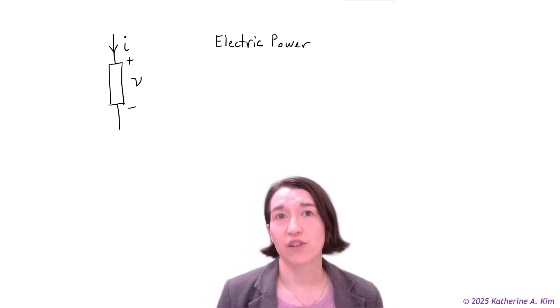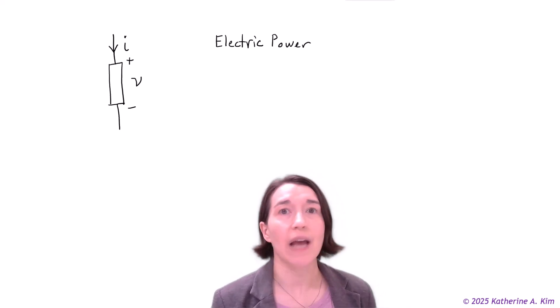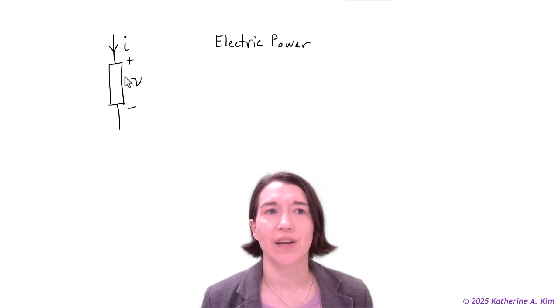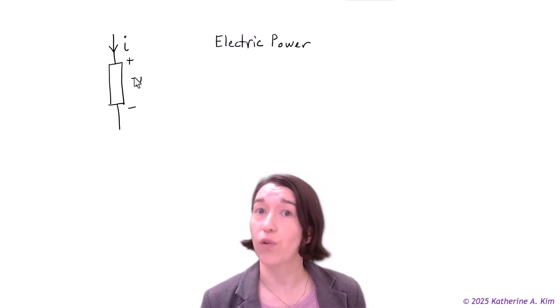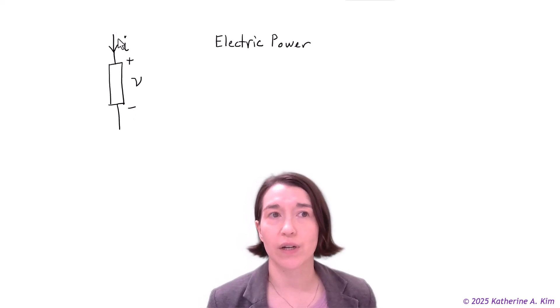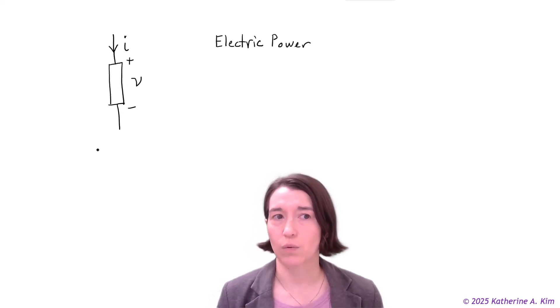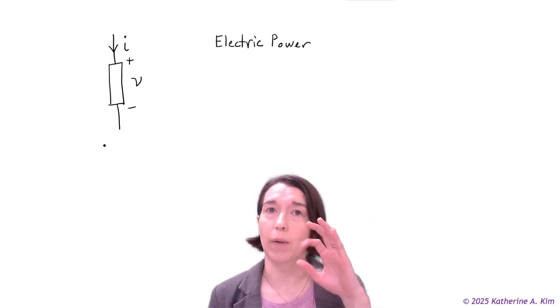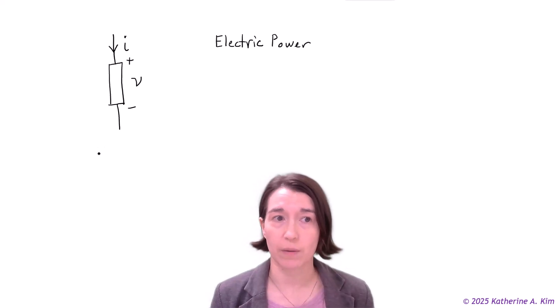Here we're learning about electric power through circuit elements. You can see on the left here we have an element. It has two terminals and we have a voltage over it. This is the voltage over the element and we have a current defined into it, into the positive terminal. When we define the current into the positive terminal we call this a passive element.